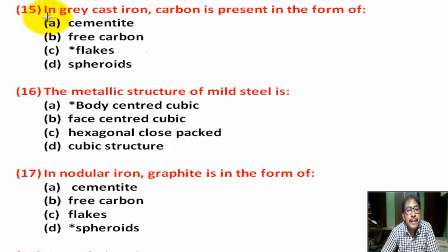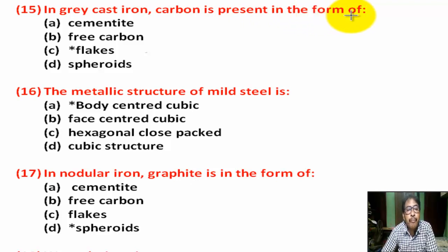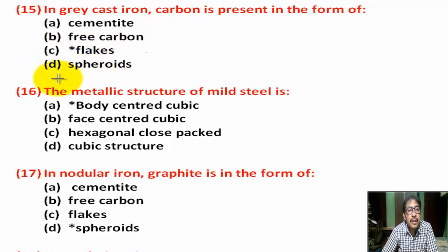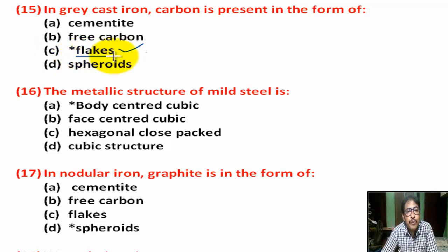Question number 15: In gray cast iron, carbon is present in the form of — Option A: cementite. Option B: free carbon. Option C: flakes. Option D: ferroids. Correct answer is Option C — flakes. In gray cast iron, carbon is present in the form of flakes.